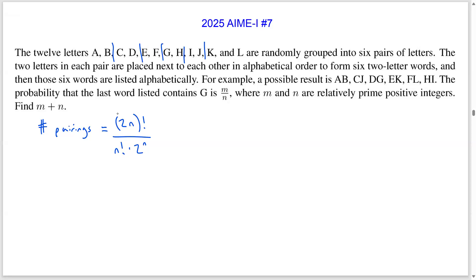The problem is that this overcounts, and specifically, we overcount by N factorial, since the ordering of the N pairs is irrelevant. We also overcount by an additional factor of 2 to the N because the ordering of the letters in each of the N pairs is irrelevant. So when I plug in N equals 6, I will get 12 factorial over 6 factorial times 2 to the 6th. This also equals 3 times 5 times 7 times 9 times 11. That's the number of ways to pair off 12 letters into 6 pairs.